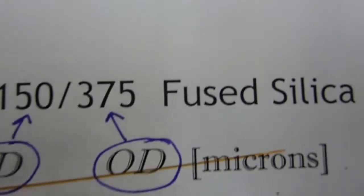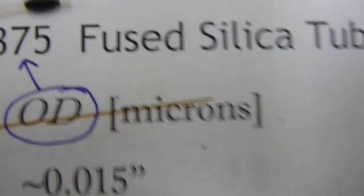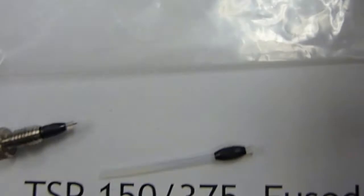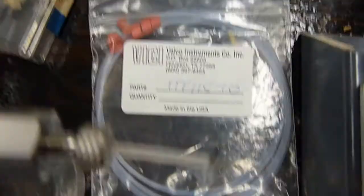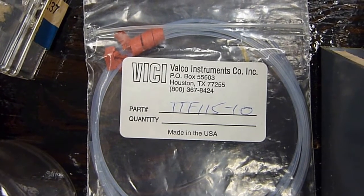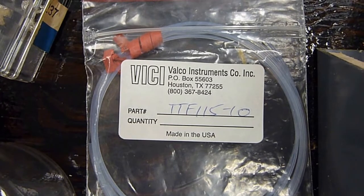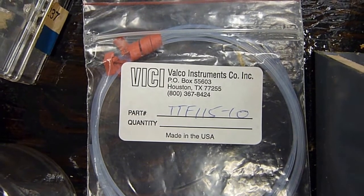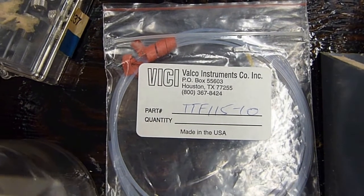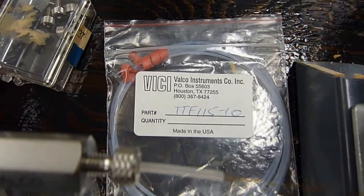And then for the adapter, use Teflon tubing. So use that. The Teflon tubing has an inside diameter of 15 thousandths. So the fused silica tubing will slide into the Teflon tubing.